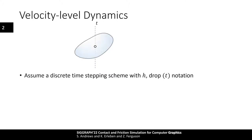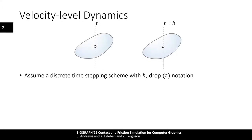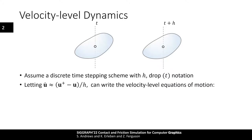In computer graphics, we are often only interested in determining the dynamical behavior at particular instances in time, for example whenever an animation frame is drawn to the screen. So let us drop the time dependence from our dynamics equations and assume that a discrete time stepping scheme is used to evolve the state of our system. Given the current time instant, we are only interested in computing the state at time t plus h. Euler integration is a popular choice in graphics, using a linearized version of the dynamics to advance the state at each time step. We use a first-order Taylor expansion of the velocities to approximate the accelerations as a difference of velocities at the beginning and end of the time step divided by the duration h.